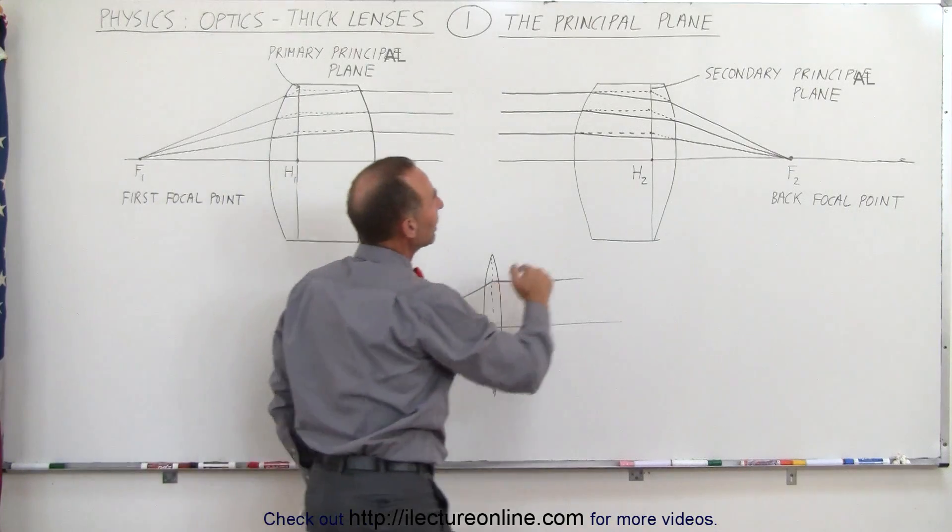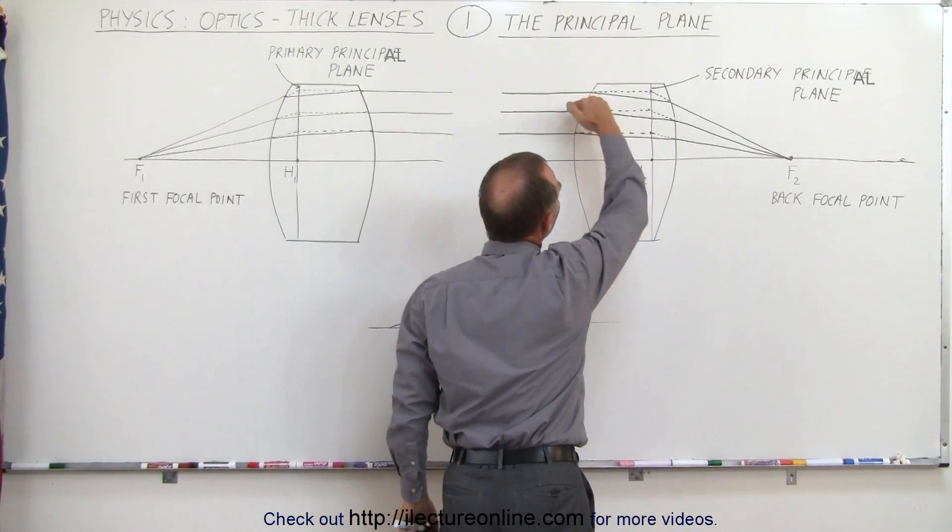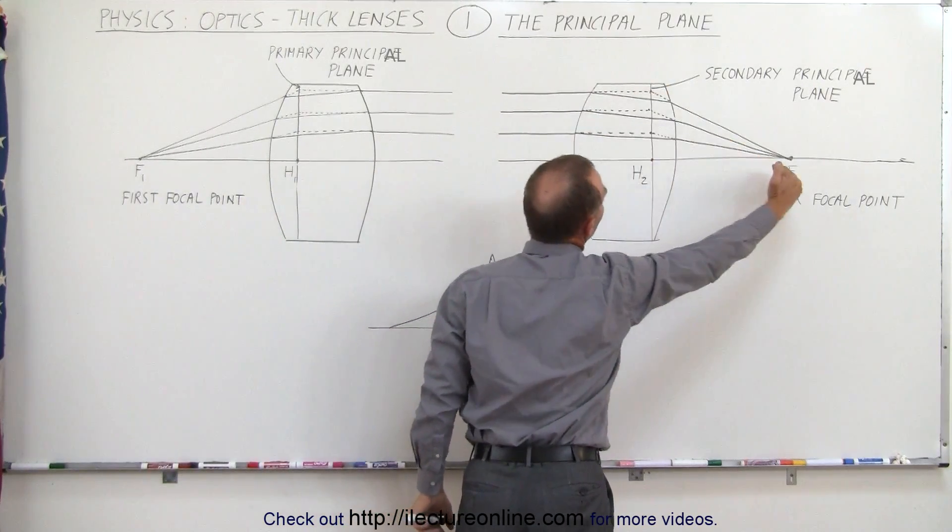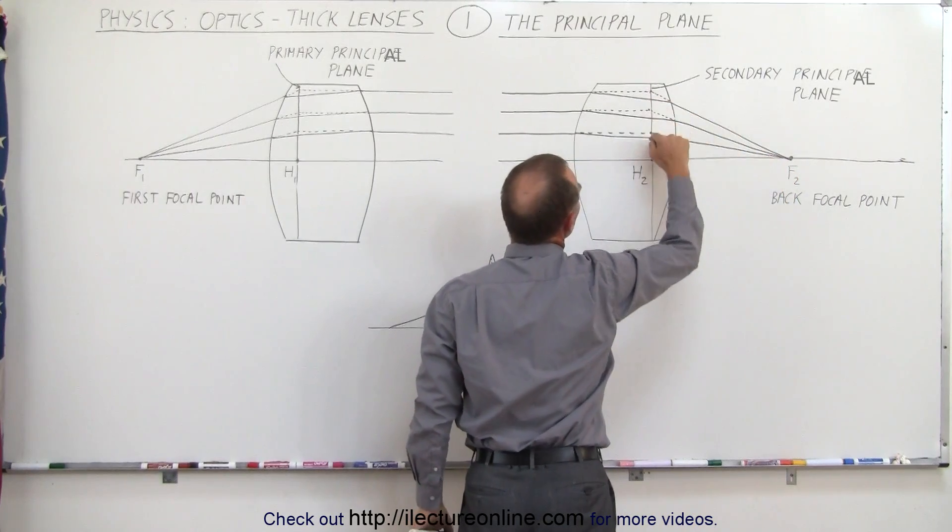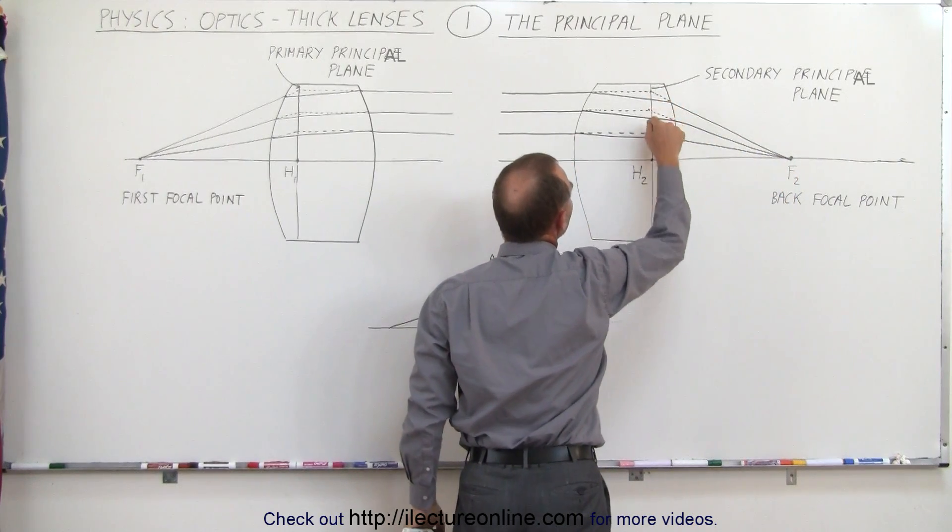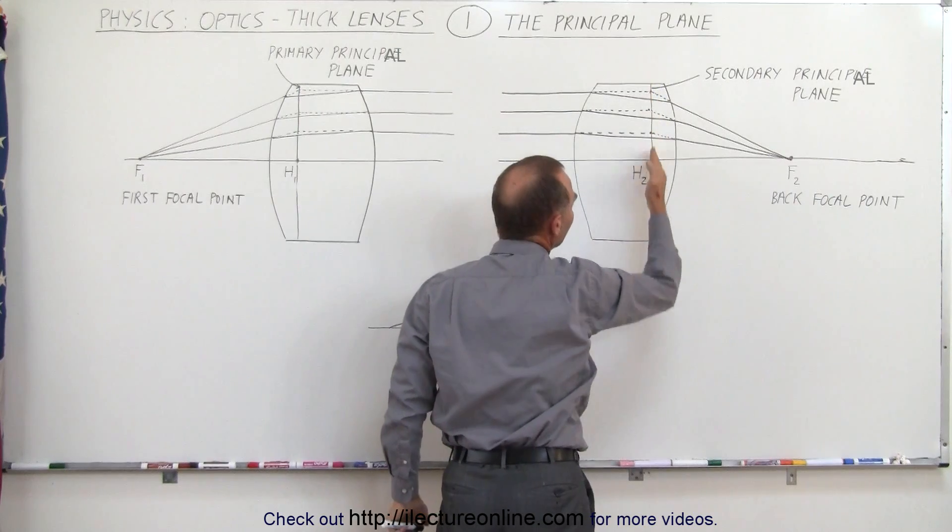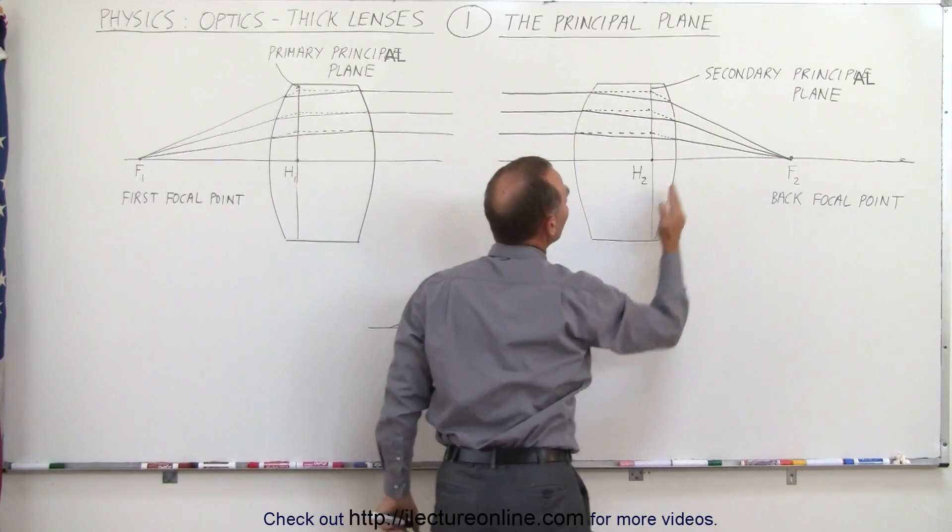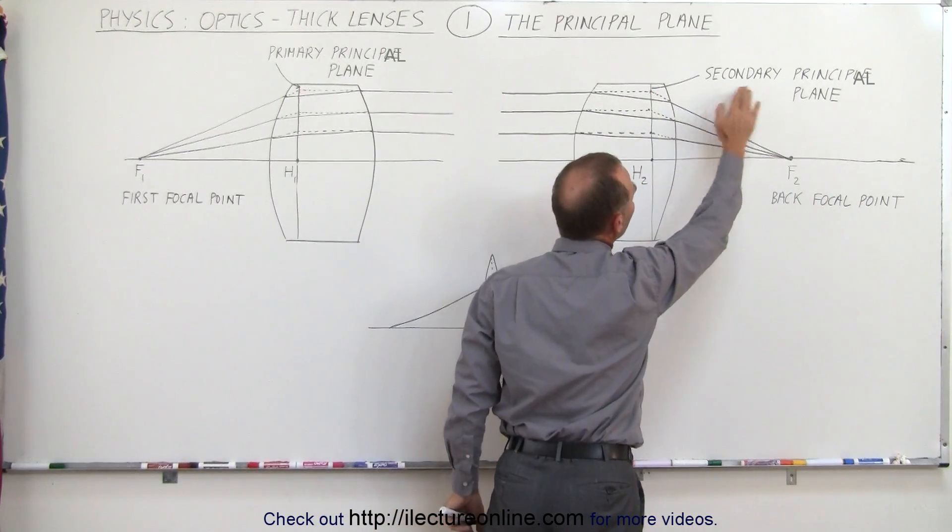Now notice again if we draw the line straight through with a dashed line in this direction, and from this direction we draw the line straight through again, those lines will meet at a particular point, and if we draw a line through there that line represents the secondary or back principal plane.